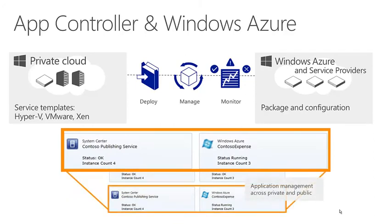App Controller enables us to manage both a Virtual Machine Manager service on the left and also Windows Azure applications or applications on a service provider from within a single console. We can see information on what's running, how many instances are running, and we can perform actions against these services as well as deploying new applications on both private and public clouds.